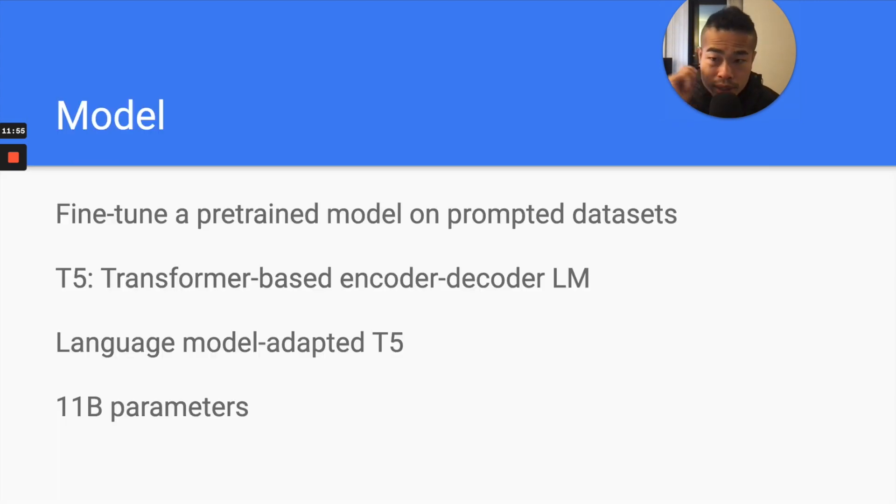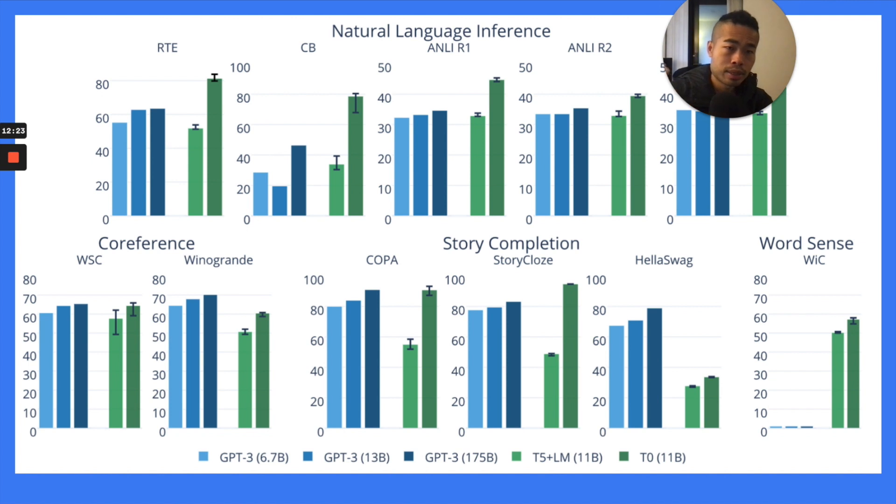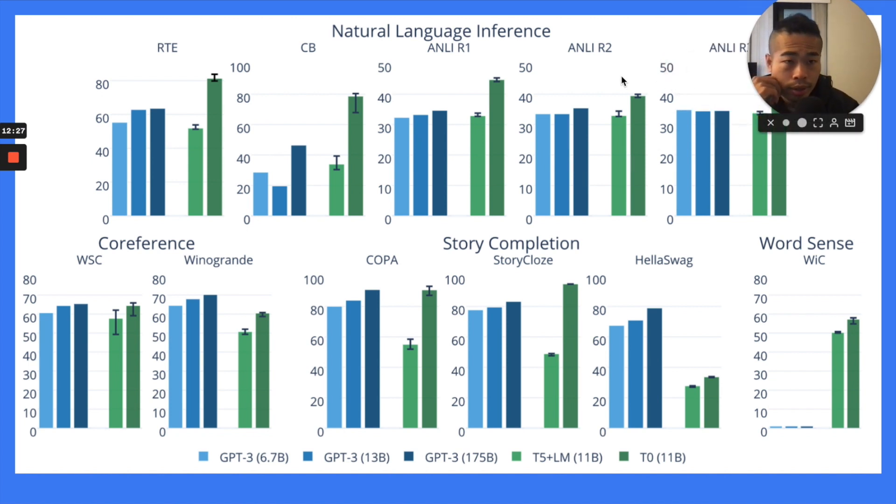So the model they use in this paper, it's T5, but it's not really just T5, it's a language model T5. It's like the T5, and they kind of fine-tuned on a language modeling task. And it has 11 billion parameters. And as for how they do the prompting, they just fine-tune a pre-trained model, fine-tune a pre-trained T5. More specifically, it's LM-T5. Even 11 billion parameters, you would say it's a big model, but compared to GPT-3, it's not that big. So this is their held-out test task.